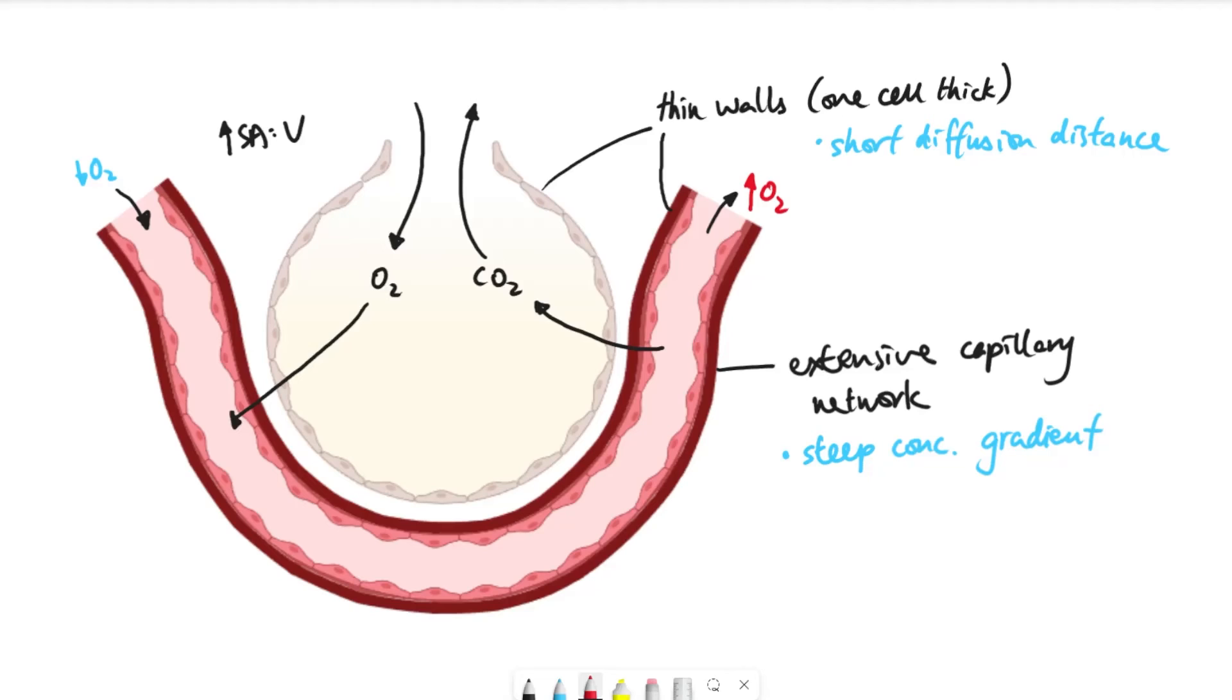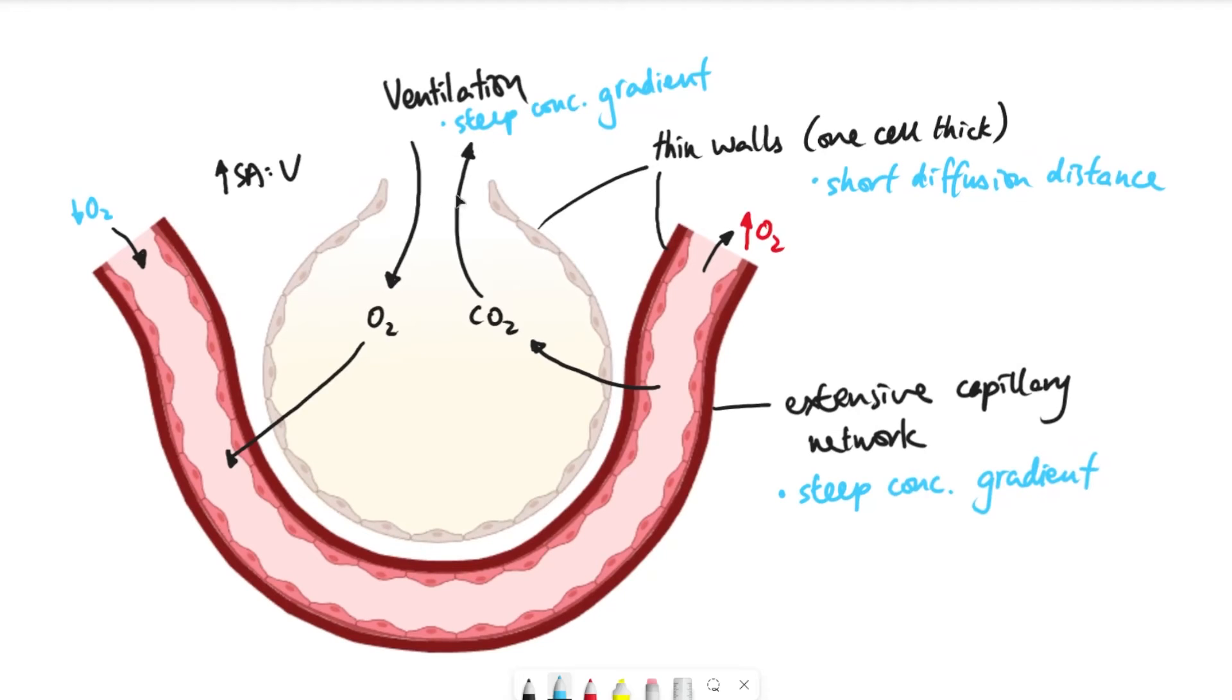Some other things that you can also mention is that there are loads of alveoli around. So there's so many of them, again, further increasing the surface area to volume ratio. And also alveoli itself are quite elastic, so it's allowing that ventilation to happen, which maintains again a concentration gradient. Notice the difference between these two.